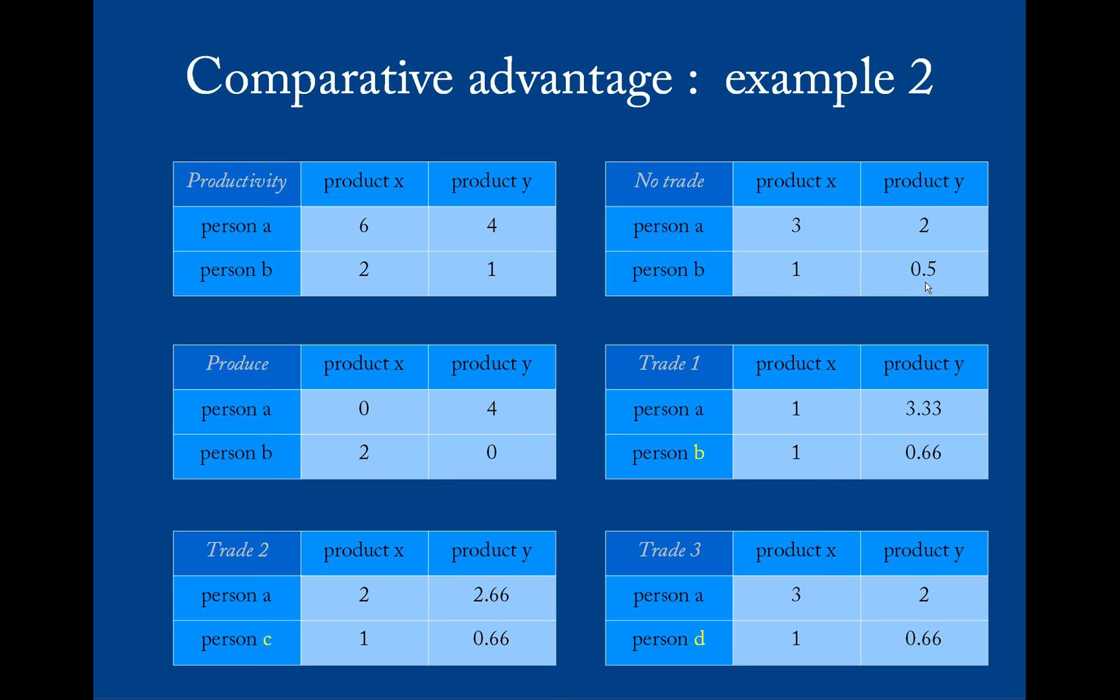But if they trade at a price between half and two-thirds, then all four people are better off, because then person A has gained more than three X and person B, C, and D have gained more than 0.5 of Y. So the price has to go either a little bit above half for every one X or a little bit below two-thirds of Y for every one X.